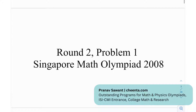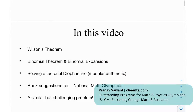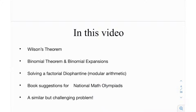This is problem number one from round two of the Singapore Math Olympiad in 2008. In this video, we're going to be discussing Wilson's theorem, binomial theorem, and binomial expansions. Basically, what we're going to need from this problem is just the expansion of (1+x)^n. That's all we need for this problem, and it's pretty simple and trivial.